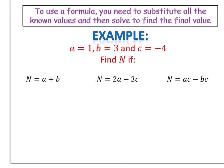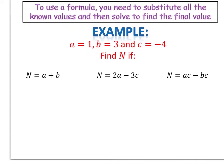We have a equals 1, b equals 3, and c equals negative 4. We want to find n if n equals a plus b. So we keep n equals, substitute a equals 1 and b equals 3, giving us 1 plus 3. So n equals 4.